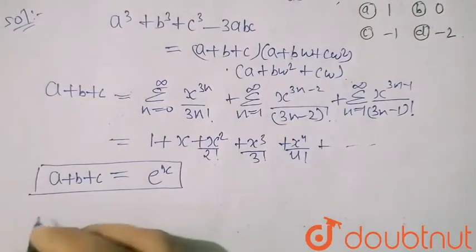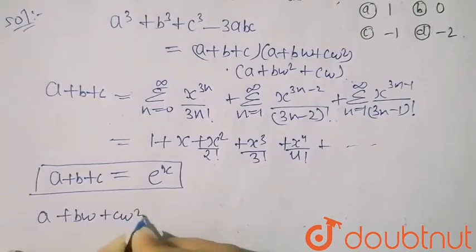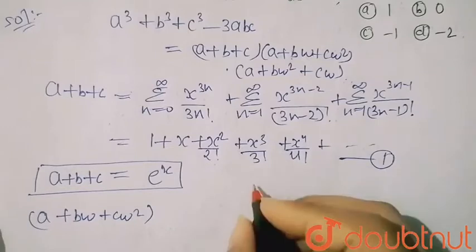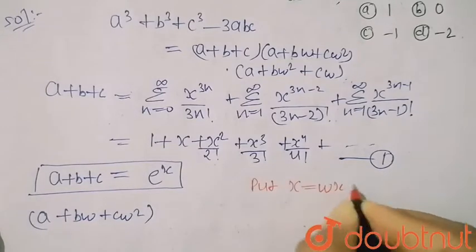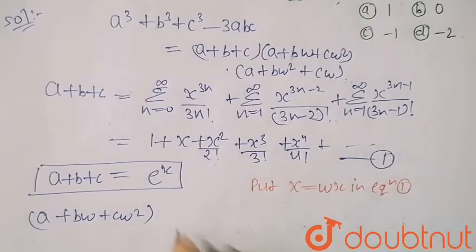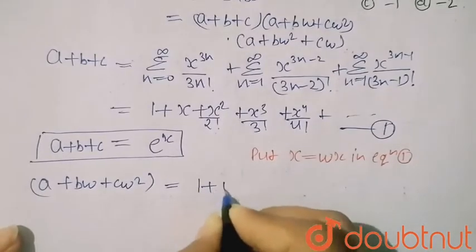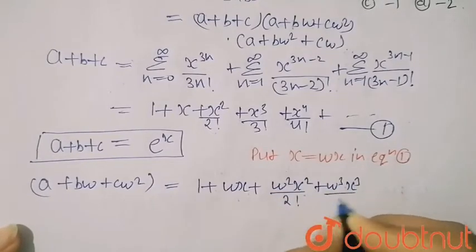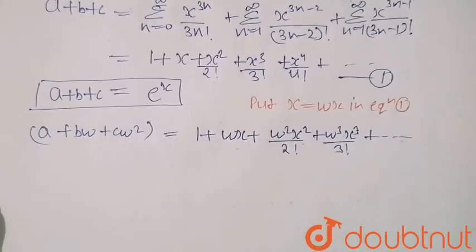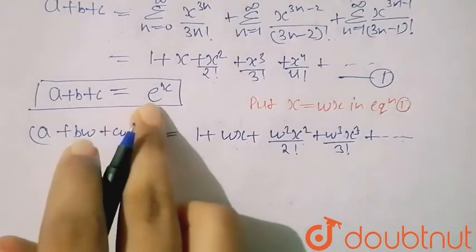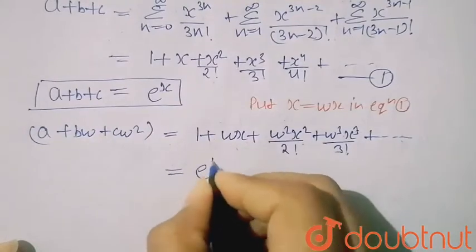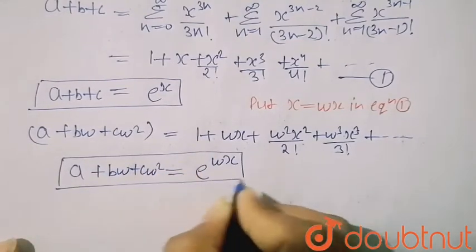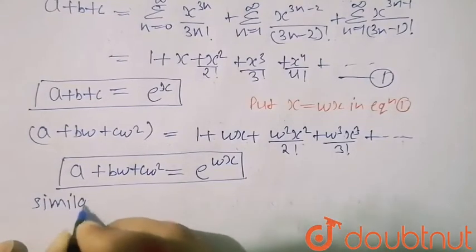Now I have to find a+bω+cω². Taking equation one, I substitute x = ωx. This gives 1 + ωx + ω²x²/2! + ω³x³/3! and so on. Since the original series equals eˣ, substituting x with ωx gives e^(ωx). So a+bω+cω² = e^(ωx).